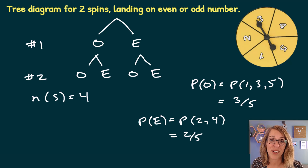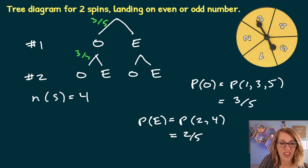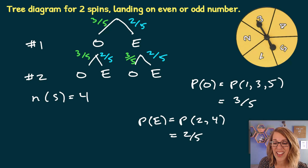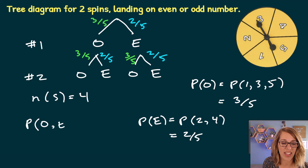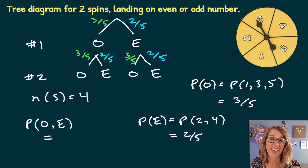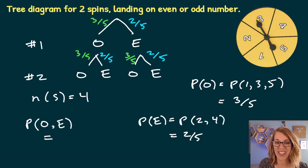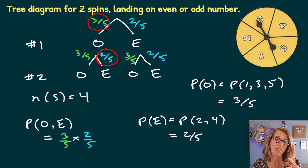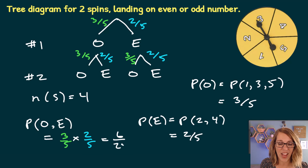Let's put those probabilities on the tree diagram. The probability of landing on odd is three-fifths on each of the odd branches, and the probability of landing on even is two-fifths on each of the even branches. To find the probability of landing odd first followed by even, that's P(odd and even), so I multiply: three-fifths times two-fifths equals six twenty-fifths.